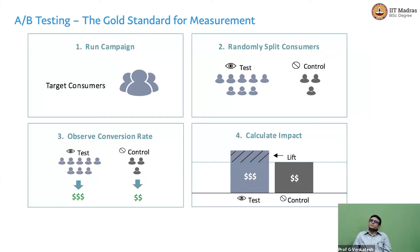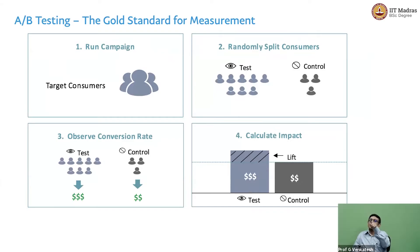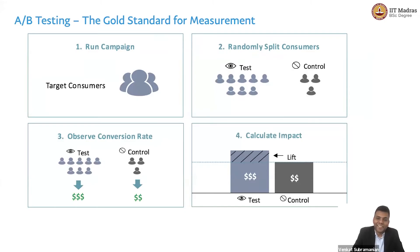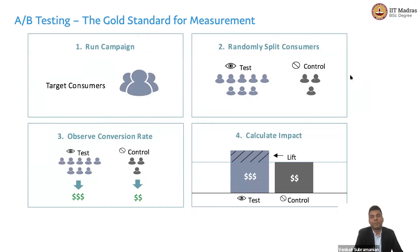You expose only the test group to the new idea, to the new method, whereas the control group continues in the same existing way. The eye symbol shown there means allowing them to see it, and the cross means you don't allow them to see it.